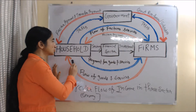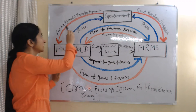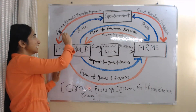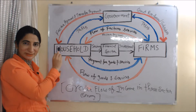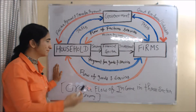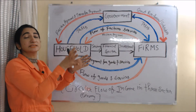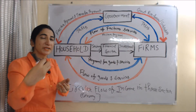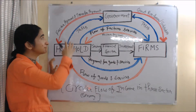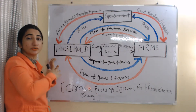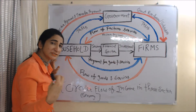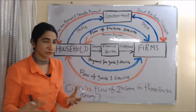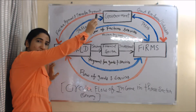We see the relation between the household sector and government. Government makes both transfer payments and factor payments to the household sector. Factor payment means, for example, a person from the household sector working as a government employee receives wages and salary from the government. Transfer payments include scholarships, pension, or unemployment allowance given to the household sector. In return, the household sector pays taxes to the government.